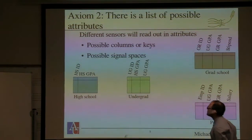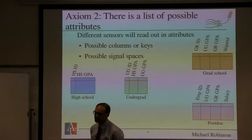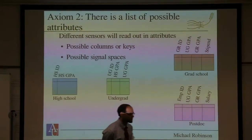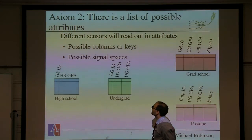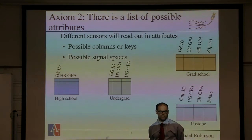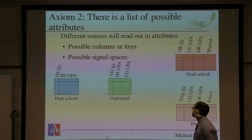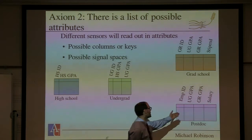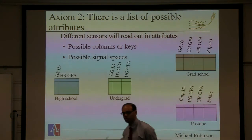The second axiom is that not just that these tables exist, but that they contain useful data — attributes that I can list and talk about. The records in high school might have a high school ID number and a high school GPA. The undergraduate institution has an ID number and undergraduate GPA, and most undergraduate institutions also store the high school GPA. At grad school, they're interested in your graduate ID number, undergraduate GPA, grad GPA, and maybe a stipend. As a post-doc, you've got an employee ID, they want to know your GPAs, and they know your salary.